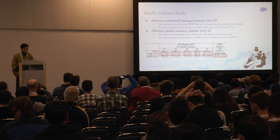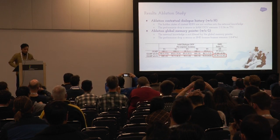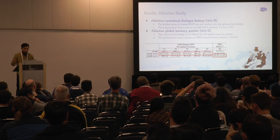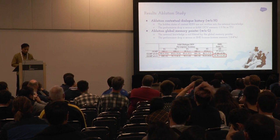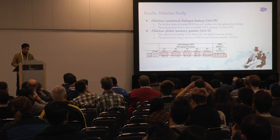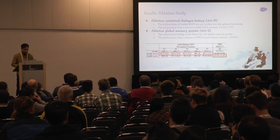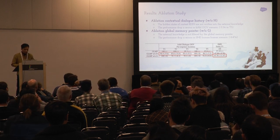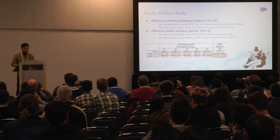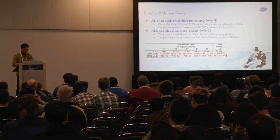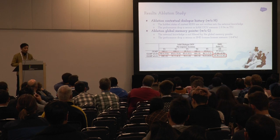We also did ablation studies, removing: contextual dialogue history, the knowledge graph edges, and the global memory pointer G. In the bAbI out-of-vocabulary setting, removing edges causes a 5 to 14% performance drop. In the Stanford Multi-Domain dataset, removing G causes an 11.5 entity F1 score drop.